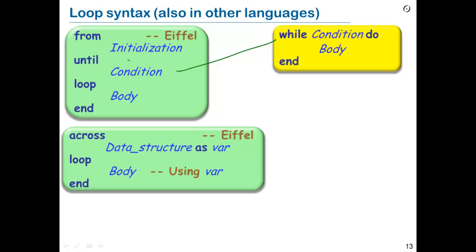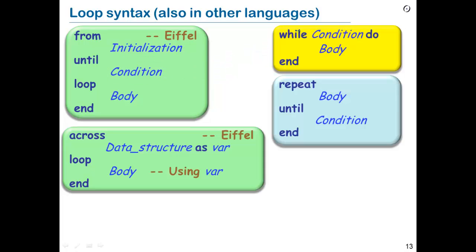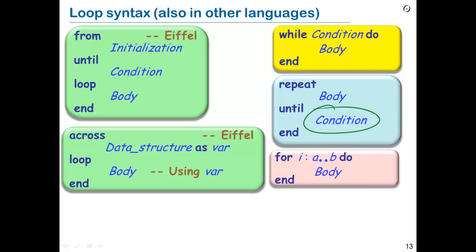In the Eiffel from-until form, if the exit condition is true right from the start, we stop. In the while form, if the condition is false right from the start, we stop. In contrast, we also have the repeat-until form, in which we execute the body first and then test. In this case the body will always be executed at least once; then we test the condition, and if it's true we stop, otherwise we repeat. In some cases, we want to execute a body for values ranging over a certain integer interval.